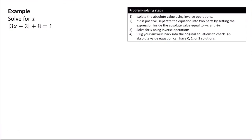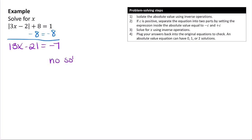In this example, we isolate the absolute value by subtracting 8 from both sides: |3x minus 2| = 1 minus 8 = negative 7. Since the absolute value cannot equal a negative number, this equation has no solution. It's important to isolate the absolute value first, because from the original equation alone, you can't always tell it's a special case.